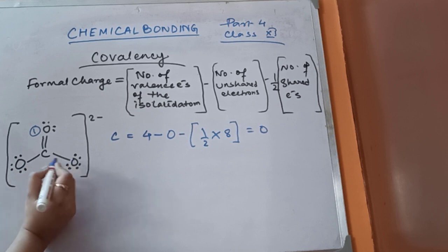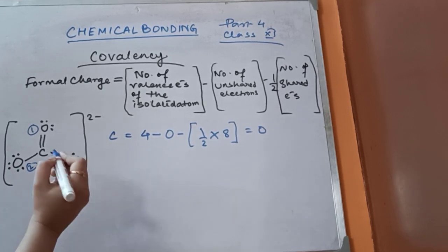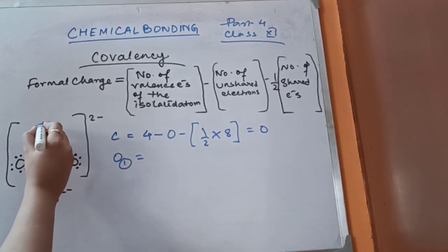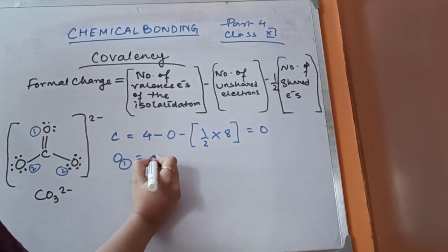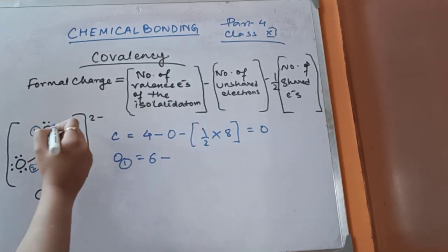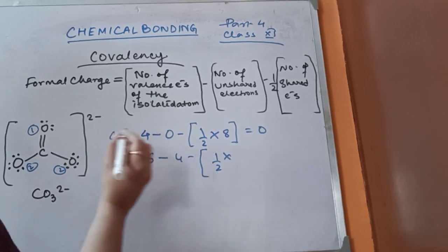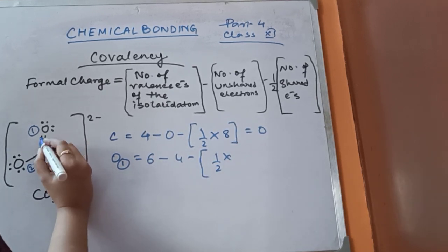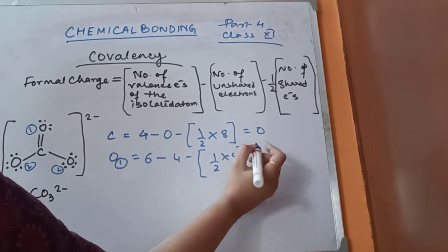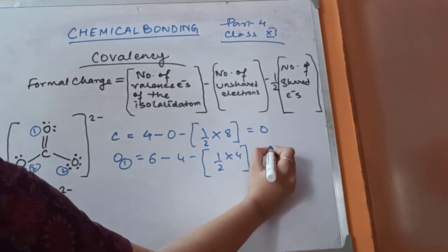I'll name the oxygen with the double bond as O1, and the other two oxygens with single bonds as O2. For O1: number of valence electrons is 6, unshared electrons is 4, shared electrons is 4 (half = 2). So: 6 minus 4 minus 2 = 0. The formal charge of O1 is 0.